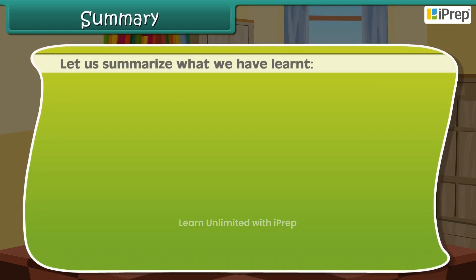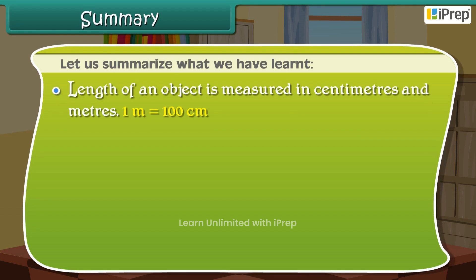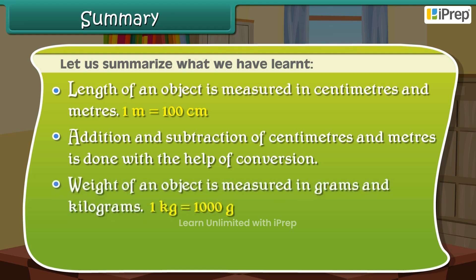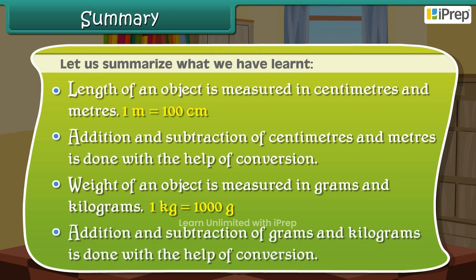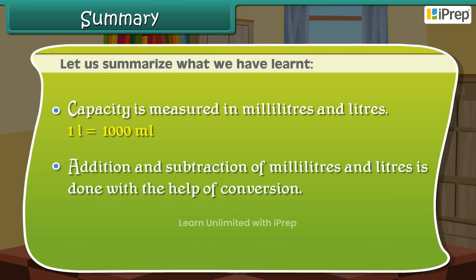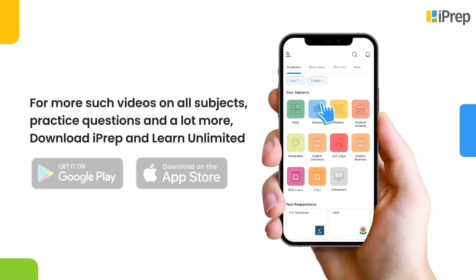Summary: length of an object is measured in centimeters and meters — 1 meter is equal to 100 centimeters. Addition and subtraction of centimeters and meters is done with the help of conversion. Weight of an object is measured in grams and kilograms — 1 kg is equal to 1,000 grams. Addition and subtraction of grams and kilograms, as well as milliliters and liters, is done with the help of conversion.